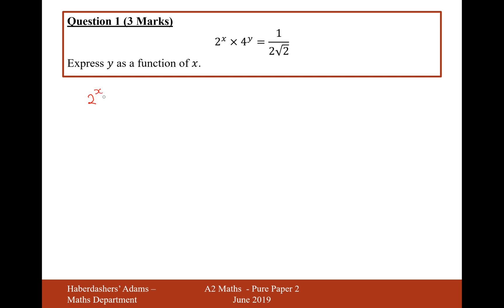So it's going to be 2 to the power of x times 2 to the power of 2, which is 4 to the power of y, equals 1 over 2 root 2, which is 2 to the minus 3 over 2. Why is this? Well, 2 root 2 is 2 to the power of 1 times 2 to the power of 1 half. Add the powers together and you get 2 to the power of 3 over 2. Because it's on the bottom of a fraction, the power is negative, so it's minus 3 over 2.